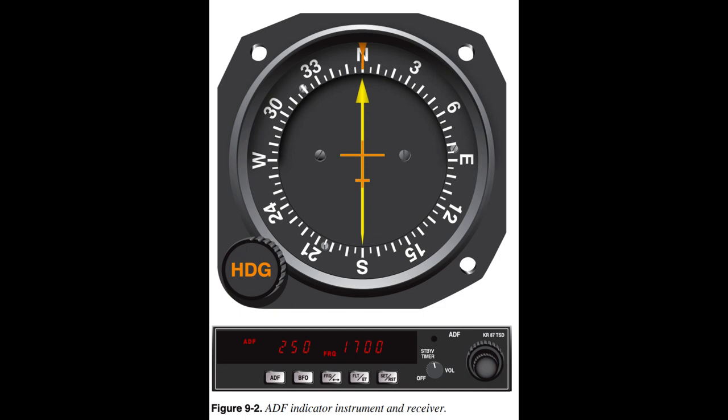NDB Components. The ground equipment (the NDB) transmits in the frequency range of 190 to 535 kHz. Most ADFs also tune the AM broadcast band frequencies above the NDB band, 550 to 1650 kHz; however, these frequencies are not approved for navigation because stations do not continuously identify themselves and are much more susceptible to skywave propagation, especially from dusk to dawn. NDB stations are capable of voice transmission and are often used for transmitting the Automated Weather Observing System (AWOS). The aircraft must be in operational range of the NDB, and coverage depends on the strength of the transmitting station. Before relying on ADF indications, identify the station by listening to the Morse code identifier. NDB stations are usually two letters or an alphanumeric combination.